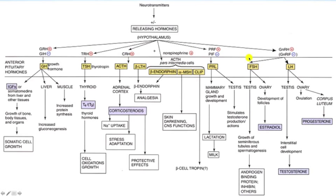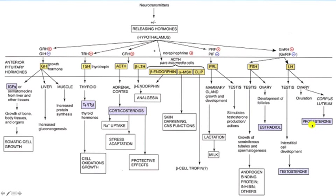The second group in the basophil category are the gonadotrophs, producing FSH and LH. They are stimulated by gonadotropic releasing hormone released from the sexually dimorphic nuclei in the medial pre-optic region of the hypothalamus, and inhibited by somatostatin released from the paraventricular nuclei. FSH in males leads to spermatogenesis; in females it promotes follicular development and production of estradiol. LH in males stimulates testosterone development; in females it leads to ovulation and production of progesterone in the corpus luteum.